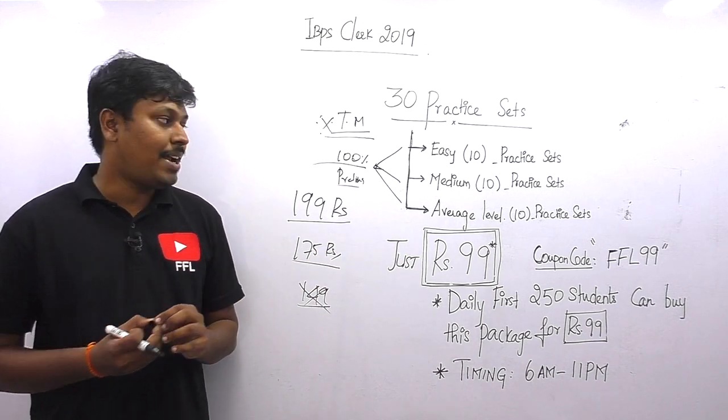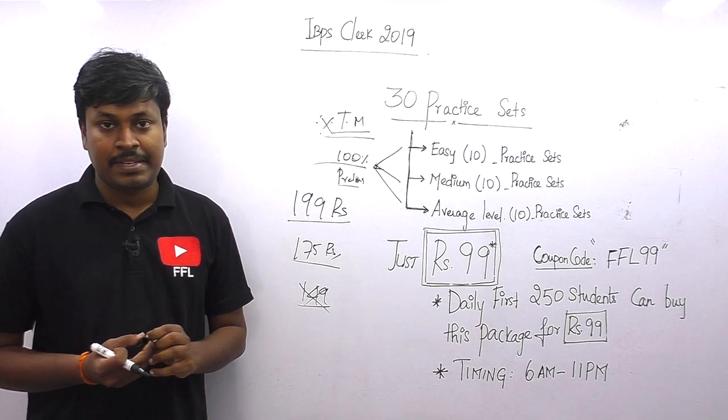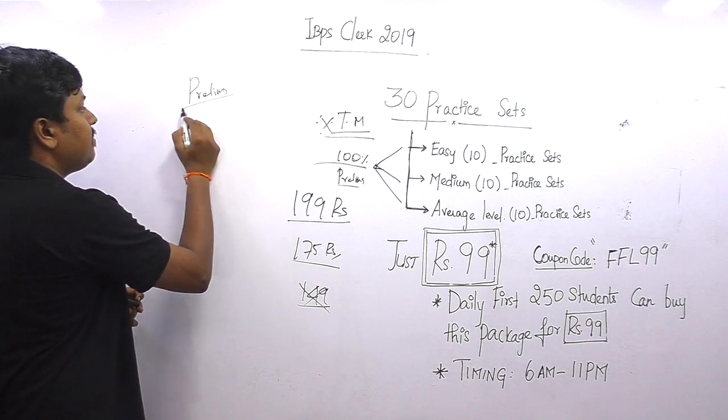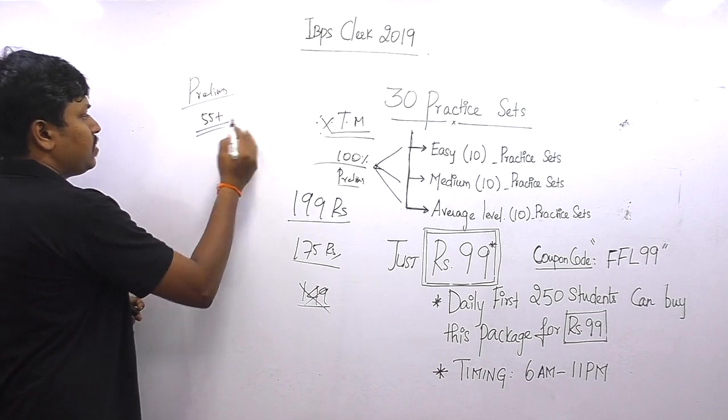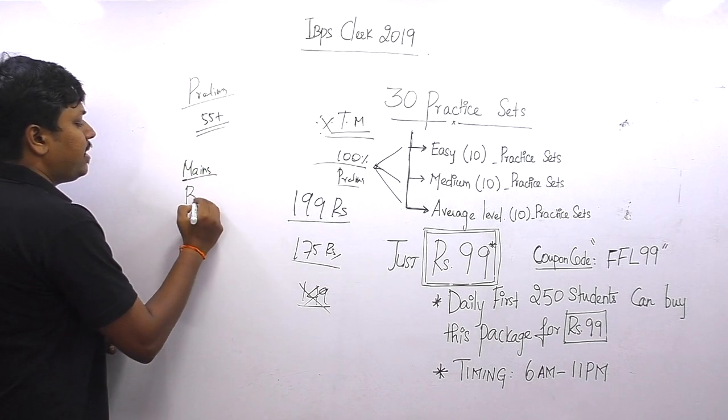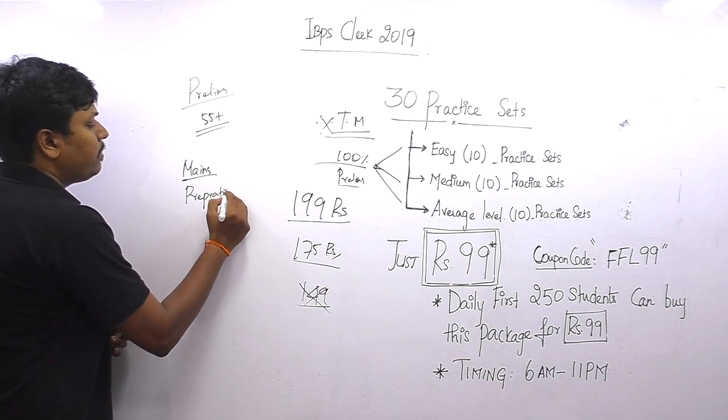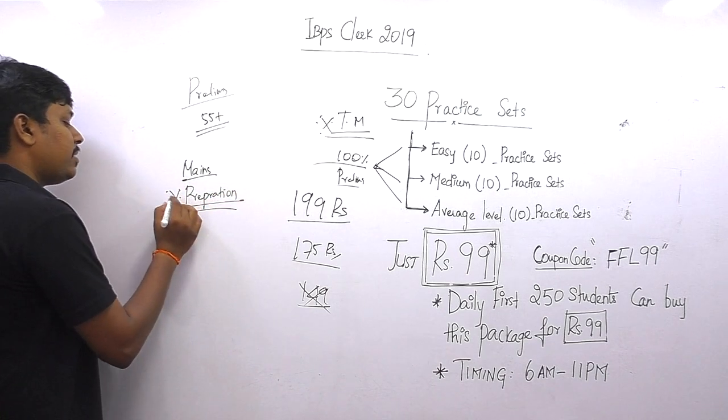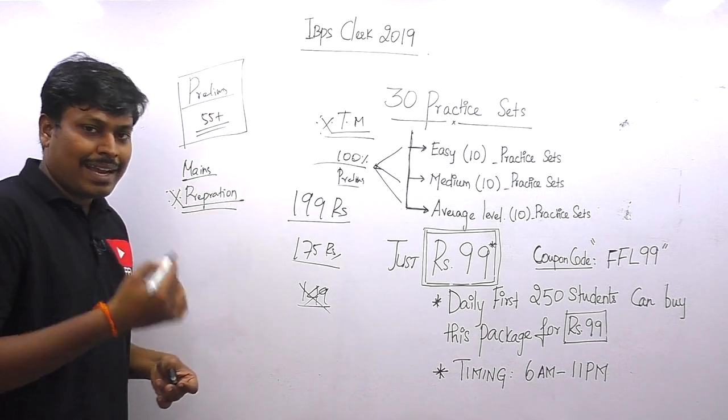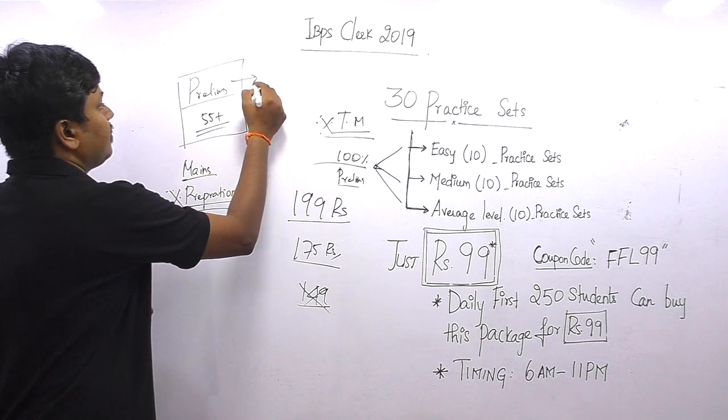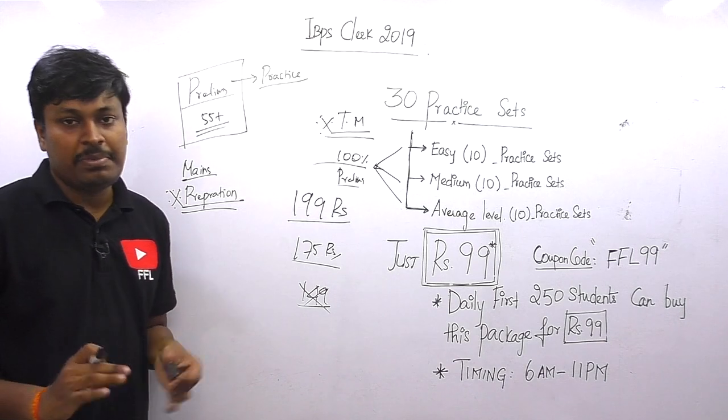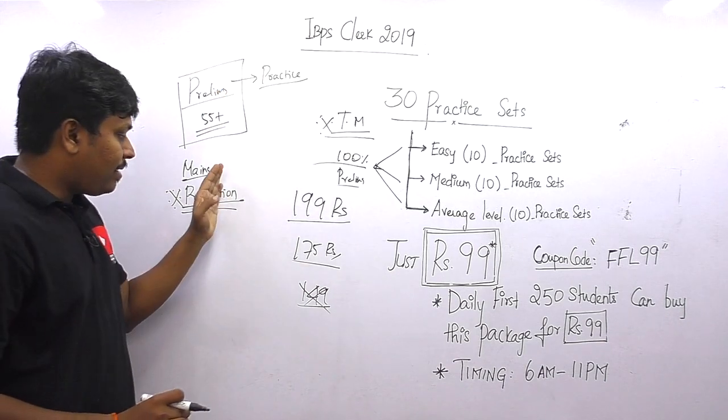Another important thing: in the prelims exam, your attempt should be nearly 55 plus. You should score more than 55. Mains exam preparation is more important. From today, start your preparation for the mains exam. For the prelims exam, don't spend time again and again learning. Practice daily at least one set, only then you can clear the prelims exam. Prelims you have to practice, mains you have to prepare more.